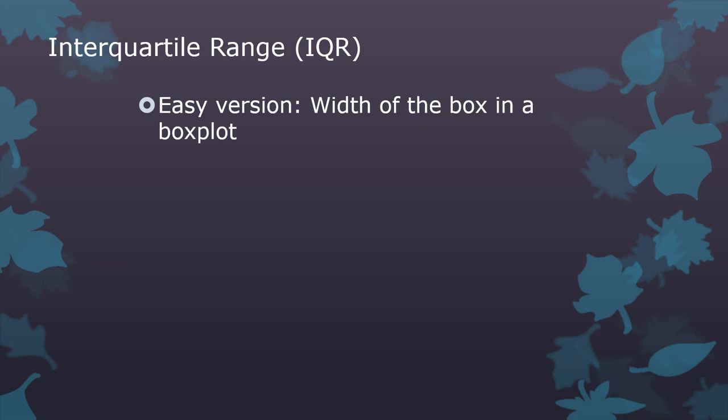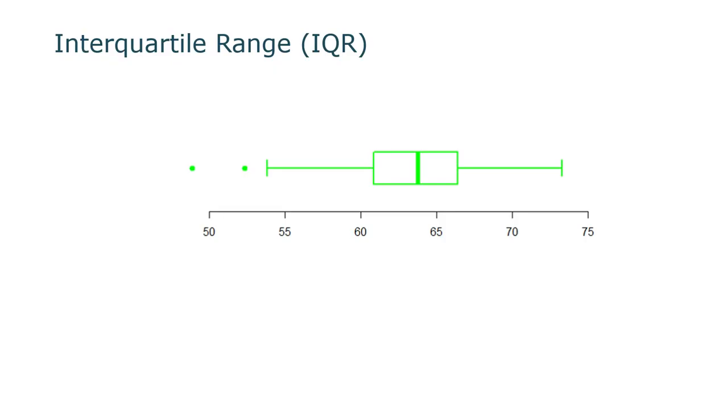But the easy version, it's the width of a box in a box plot. So here's a box plot. The bottom of the box in this case looks like it's about 61, and the top looks like it's about 66. So the IQR, the interquartile range, is about 5 inches. That's all it is. So if you have a box plot, it's pretty easy to calculate IQR.